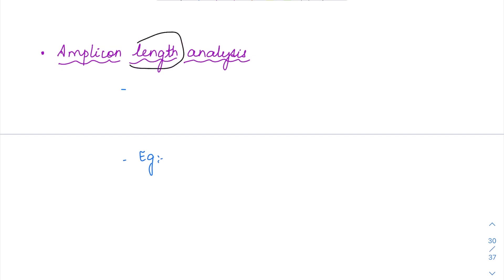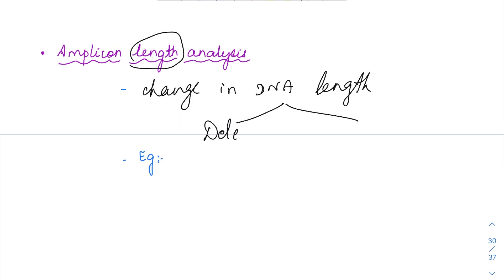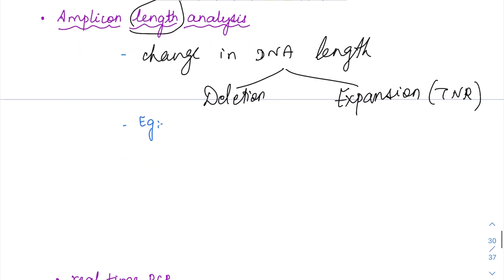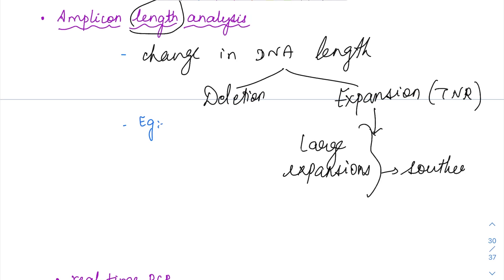Then we have amplicon length analysis. As the name suggests, there is length involved. So any disease which involves the change in the length of the DNA — like deletions, which result in shortening of the DNA, while expansions, that is trinucleotide repeats, result in lengthening of the DNA — for this we can use amplicon length analysis. When there is going to be large expansion, in that case we have to use the Southern blot technique.